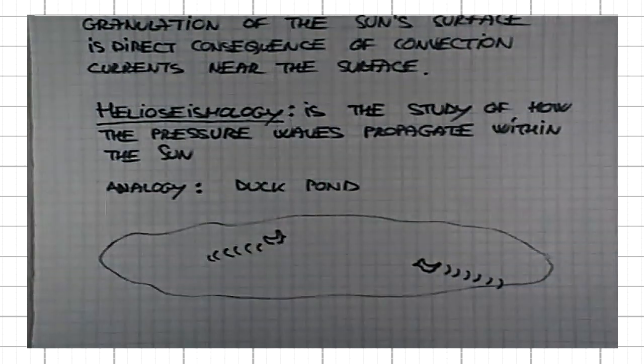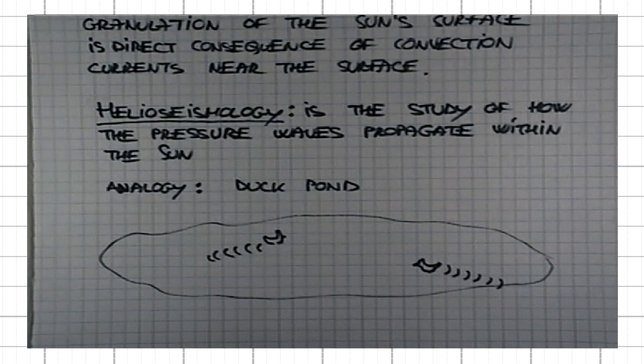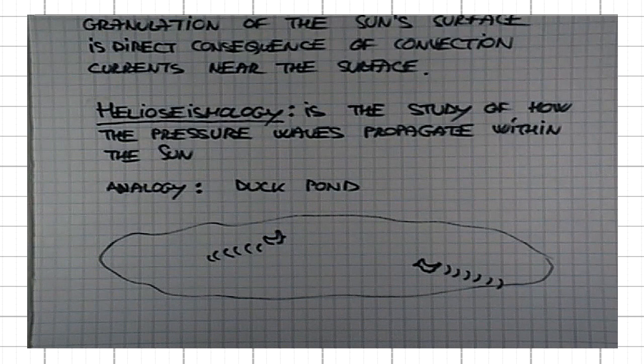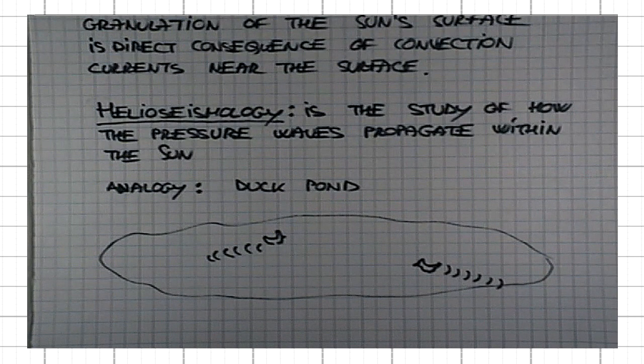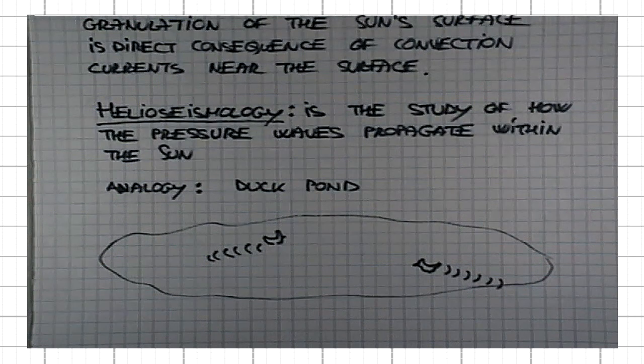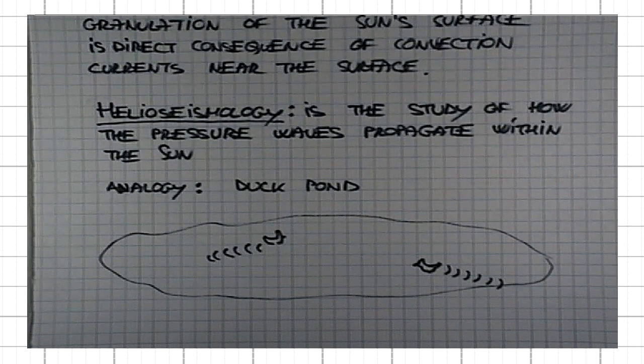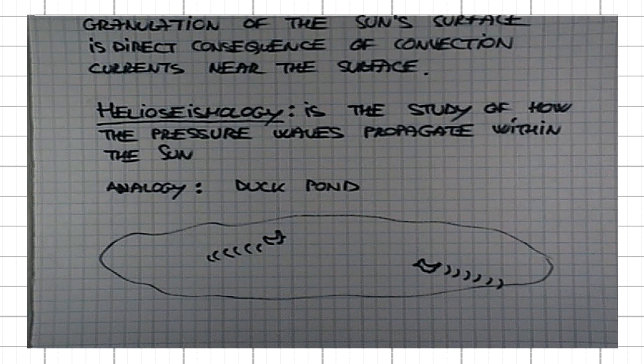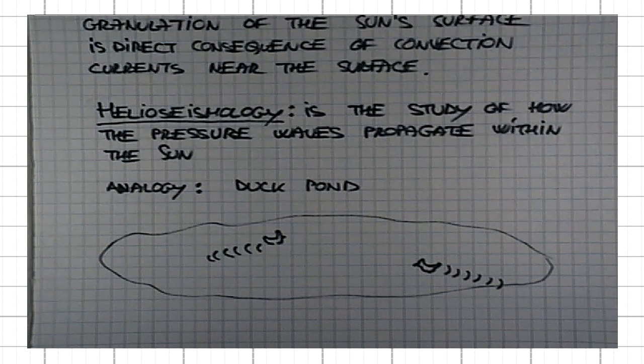Helioseismology does the same thing. By analyzing these undulations, these ripples on the surface of the sun that are produced by energy transport within its body, they can tell exactly how the temperature, the density, and the pressure profile look.